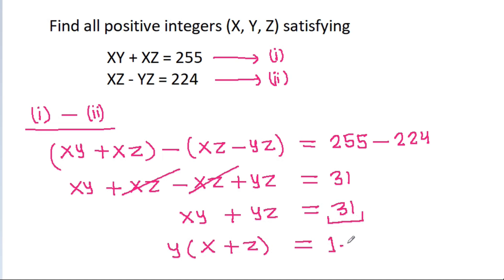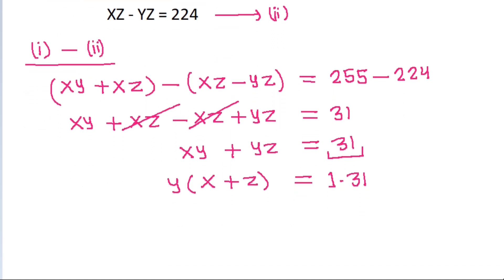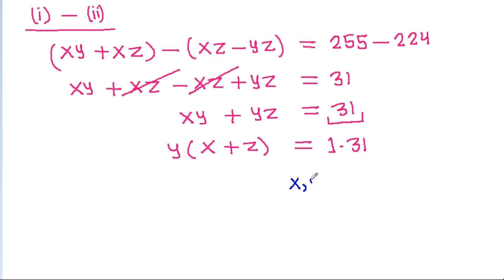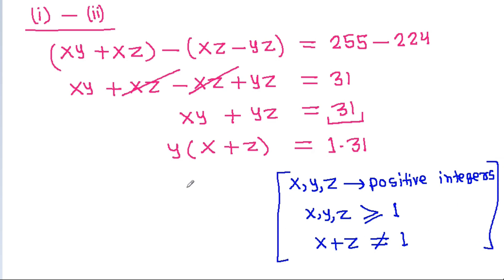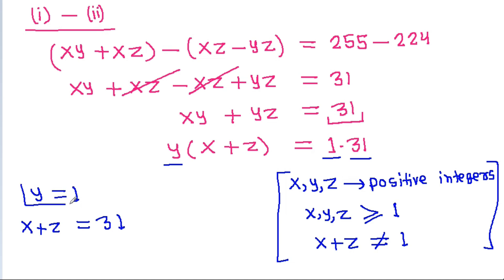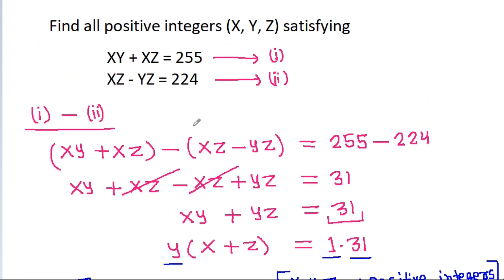So it will be 1 times 31. Since x, y, g are positive integers, they are all greater than or equal to 1. That means (x + g) cannot equal 1, so y = 1 and x + g = 31.